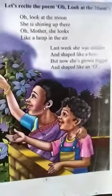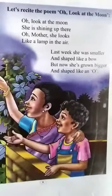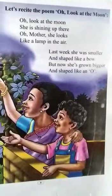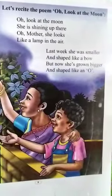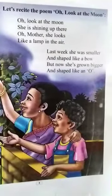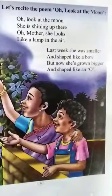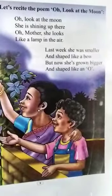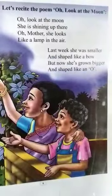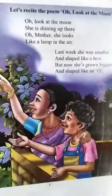Oh, look at the moon. Children, we can either sing it as a song. Please follow me. Oh, look at the moon. She is shining up there. Oh, mother, she looks like a lamp in the air. Last week she was smaller and shaped like a bow. But now she has grown bigger and shaped like an owl. Is it fun?